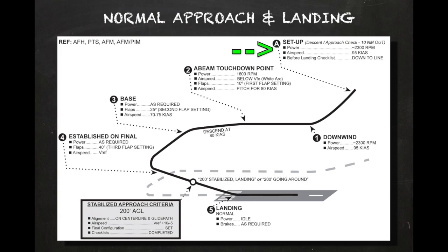When nearing the airport, the aircraft should be slowed to between 95 and 100 knots. A power setting of 2200 to 2300 RPM should be a good starting value, with adjustments made as necessary to achieve the desired target speed.